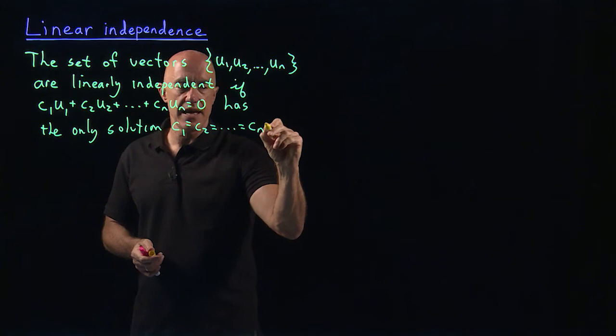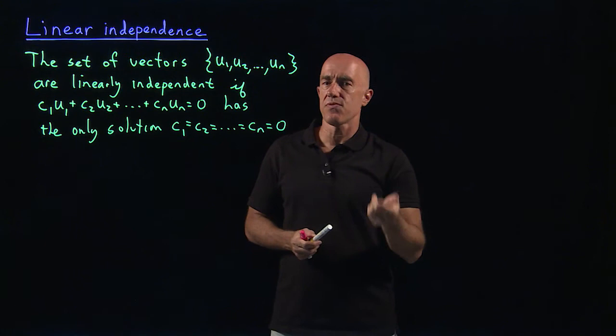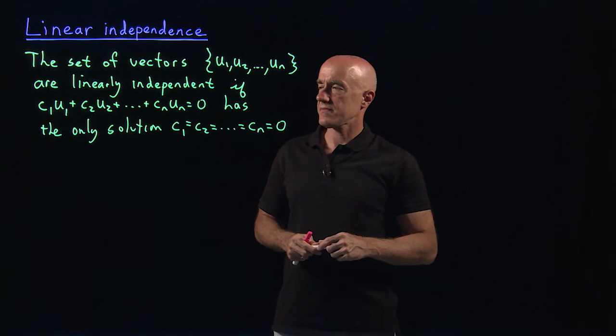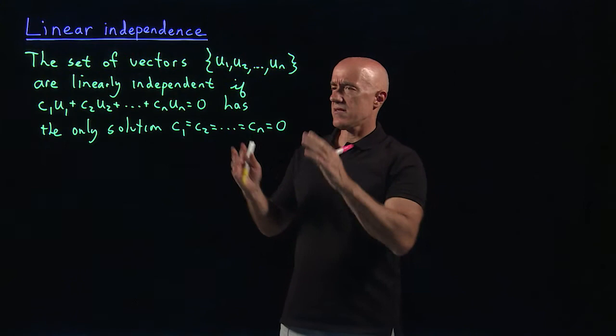So, the set of vectors U1, U2 through UN are linearly independent if this equation here has as its only solution C1 through Cn equal to 0. What does that actually mean? So, that's the formal definition of linear independence.